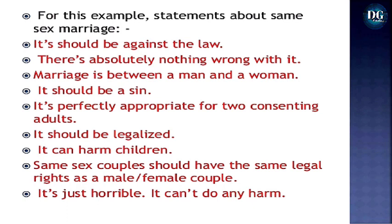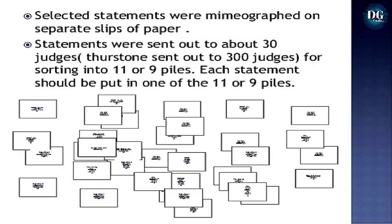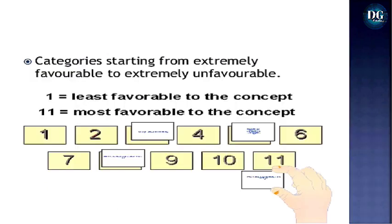Selected statements are mimeographed on separate slips of paper and sent to about 30 judges (historically 300 judges) for sorting into 11 or 9 piles. Each statement is placed in one of the 11 categories ranging from extremely unfavorable (1, least favorable) to extremely favorable (11, most favorable), with other numbers in between.